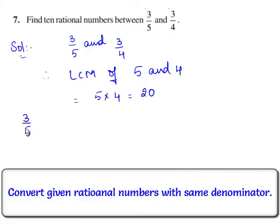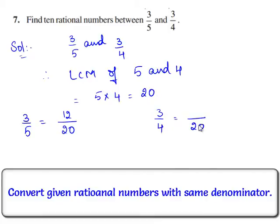Therefore, 3 by 5 can be written as with denominator 20: 5 times 4 is 20 and 3 times 4 is 12. Therefore, 3 by 5 is equal to 12 by 20. And 3 by 4 can also be written as with denominator 20: 4 times 5 is 20 and 3 times 5 is 15. Therefore, 3 by 4 is also equal to 15 by 20.